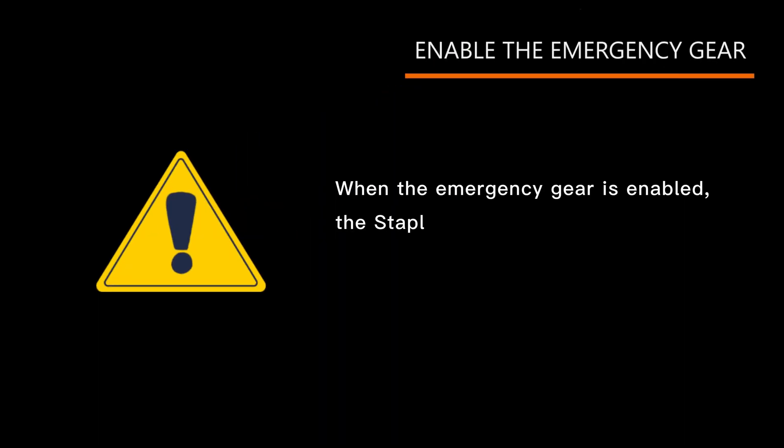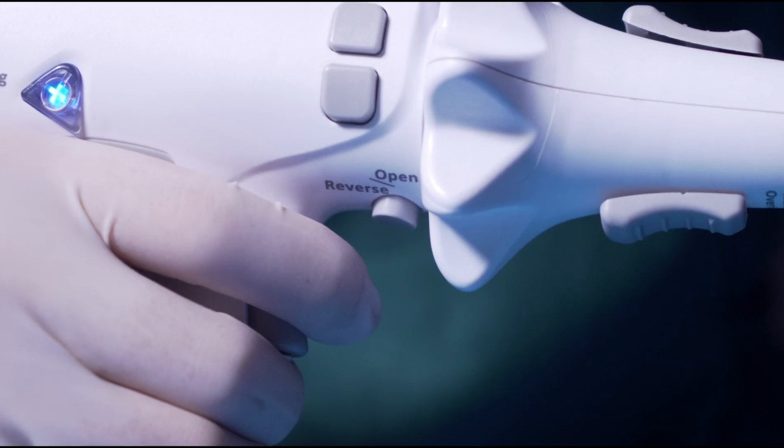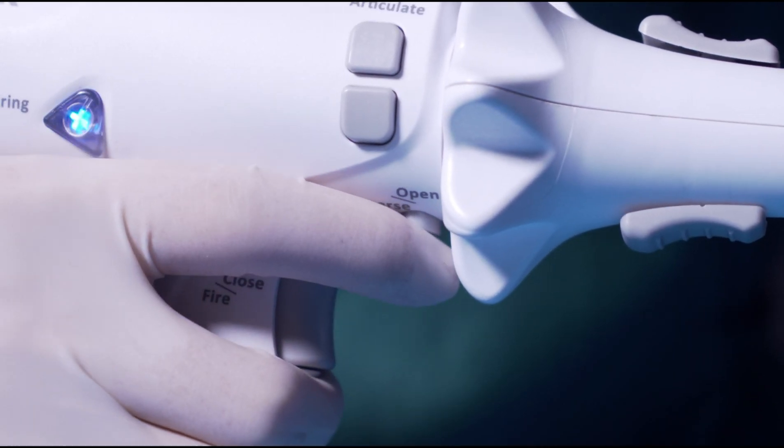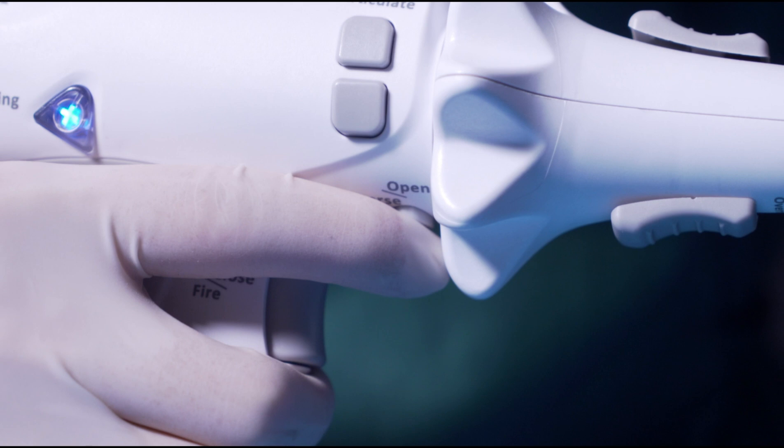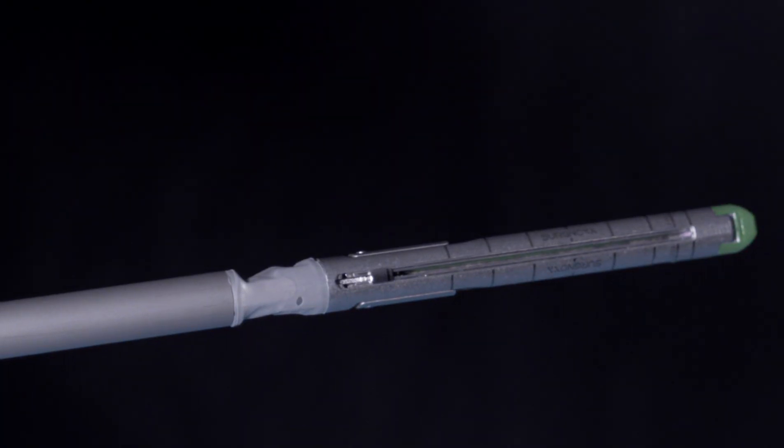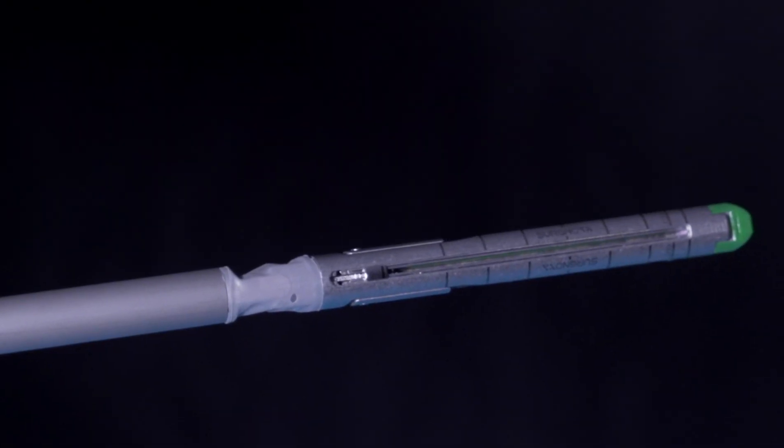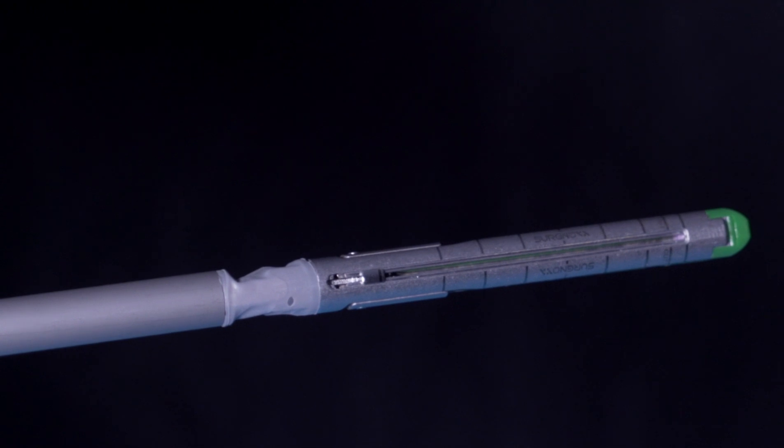When the emergency gear is enabled, the stapler will be in a disabled state and unable to be used for any subsequent firing. If the jaws are not open after pressing the reverse button, please first ensure that the battery pack is firmly installed in place. If the jaws are still not open while the stapler is in the power-on state,